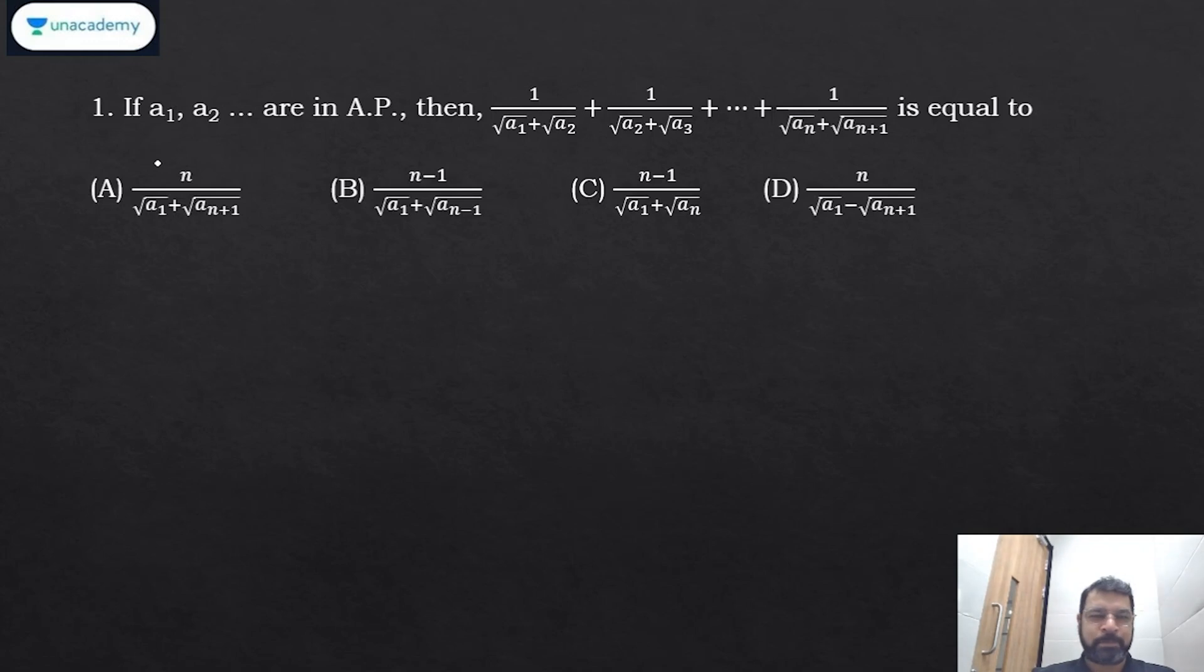If a1, a2, a3 are in AP, then find the value of this. Now in such kind of questions, whenever n is involved, the best jugaad is put n equals one.